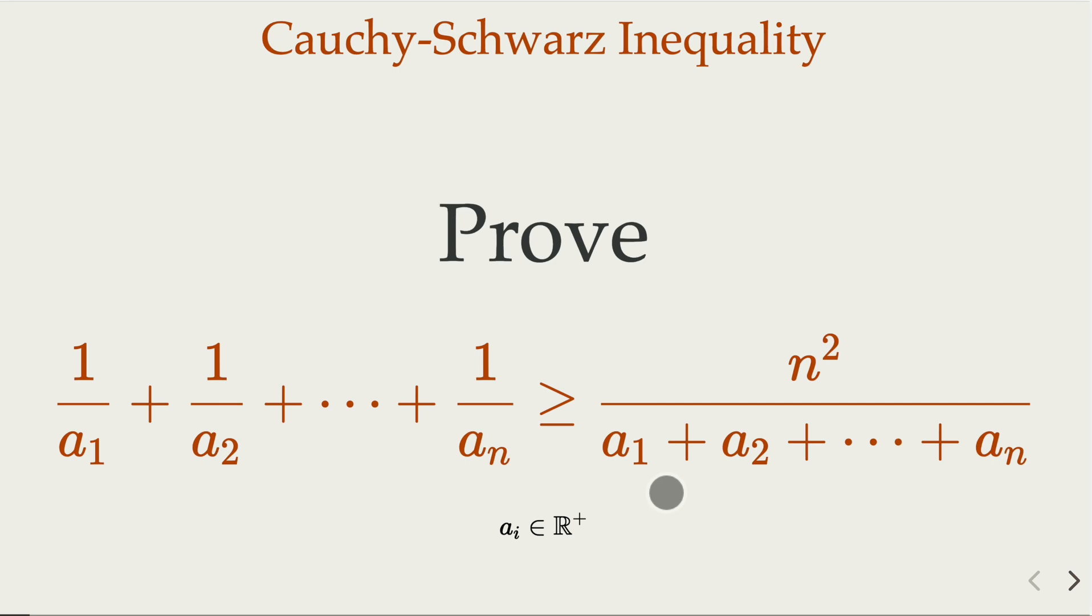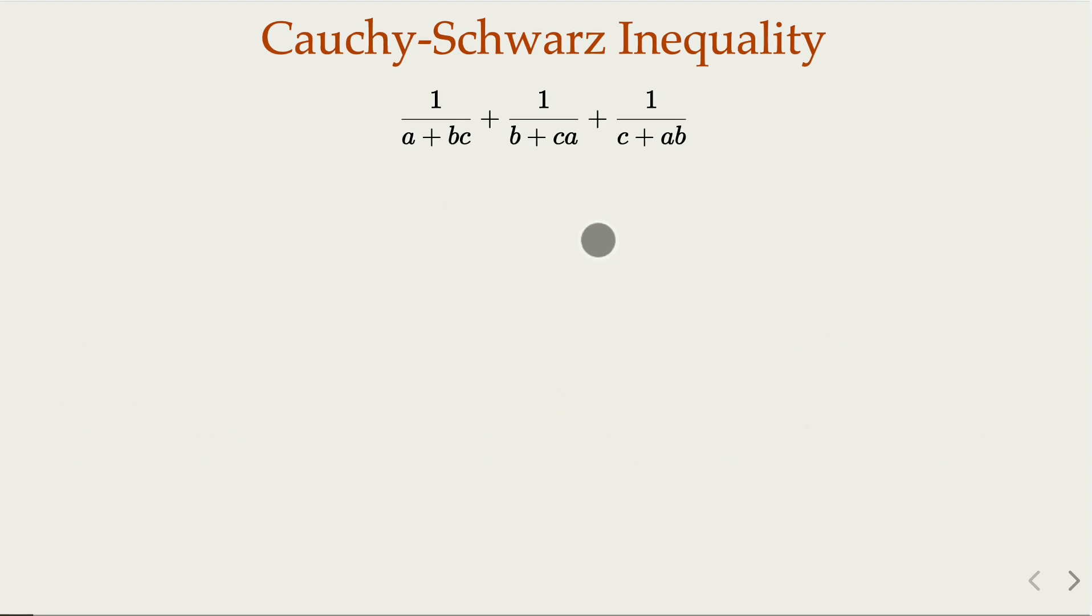Now please do check out a topic on the special form for Cauchy-Schwarz inequality when we have fractions. So here we're going to use this result. Do check out a previous video on that. So here notice that n is 3 in our case because we have 3 terms. So that would be 9 over the sum of the denominator.